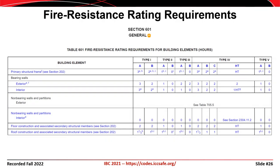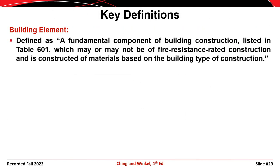Table 601 from the International Building Code presents the fire resistance rating requirements for elements in a building. Once the type of building is known, this table can be used to determine the fire rating that's required for each of the elements in that building.